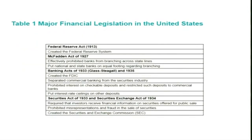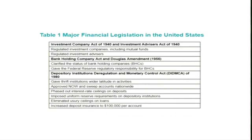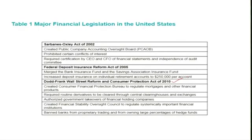Regulators continually face new challenges in a dynamically changing financial system, and unless they can respond rapidly, they may not be able to keep financial institutions from taking excessive risk. A timeline of major financial legislation in the United States shows that several acts were introduced even after the 2007-8 crisis, as regulators continually need to modify and amend existing legislation when financial institutions find new loopholes. Let me stop here and see you in the next session. Thank you.